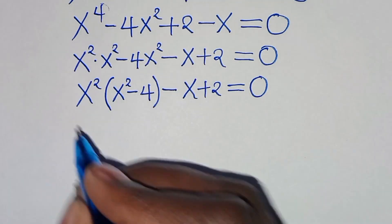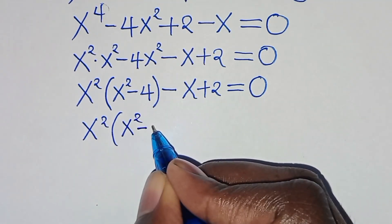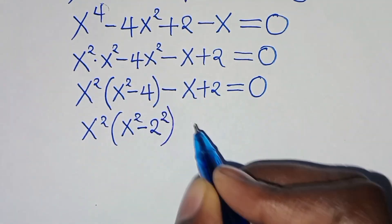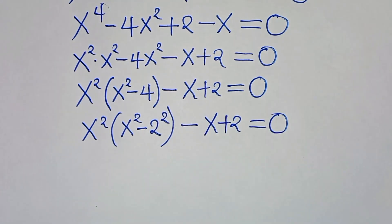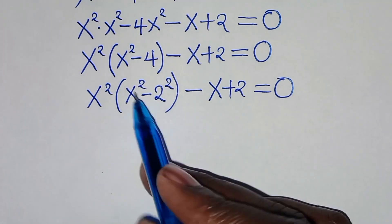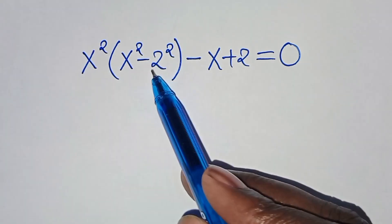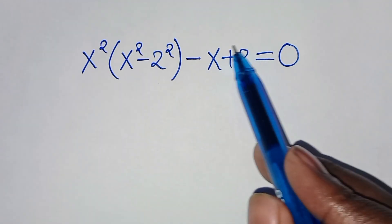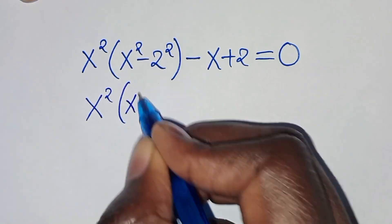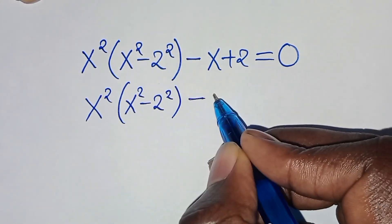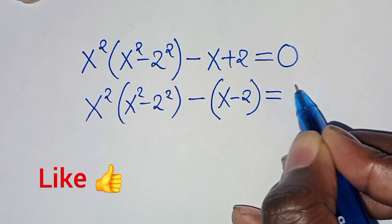Now, x squared minus 4 — we can write x squared minus 4 as x squared minus 2 to the power of 2, close the bracket, then subtract x plus 2, this is equal to 0. So x squared into the parentheses, x squared minus 2 squared, then subtract x plus 2. We can express x plus 2 as x squared minus 2 squared, and we can write this as x minus 2, close the bracket, this is equal to 0.